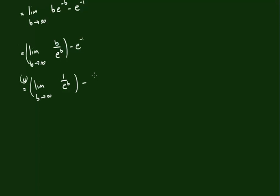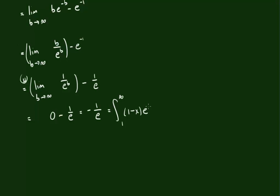So we have that limit, and this is minus 1 over e. As b goes to infinity, the denominator e to the b gets infinitely large, meaning this limit is 0. So this is 0 minus 1 over e, and the entire limit is negative 1 over e. This is the value of the integral we started with — the integral from 1 to infinity of 1 minus x times e to the negative x dx.